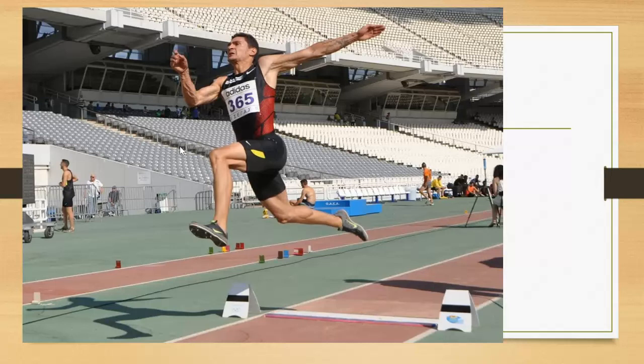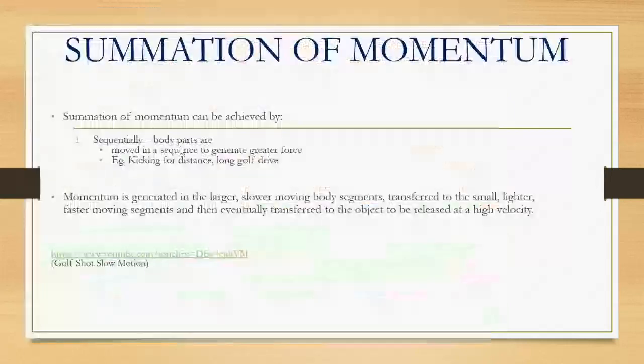As he jumps off that mat, he throws his arms up, he throws his knees up, he throws his feet up. He's trying to propel everything. The summation of force is bigger because he's involving more body parts. That allows him to generate more force because it's not just the force by his legs, it's the force by his legs, his arms, his upper body, everything. He's increased his summation of force by adding in more parts.